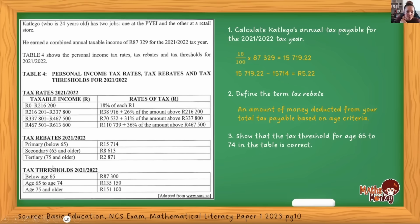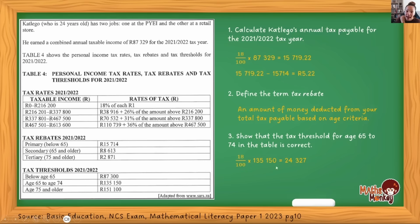So let's say this person is aged 65 to 74. The tax threshold says they have to earn R135,150 to ensure they don't have to pay tax. We need to show that if we do the tax calculation on this value — as if that were the income — our answer would actually be zero. So we take R135,150 as the taxable income and calculate 18%, because it falls in the first tax bracket — 18% of every rand — giving us R24,325.